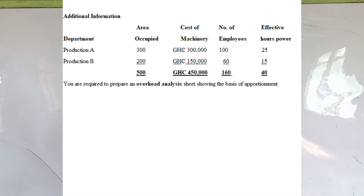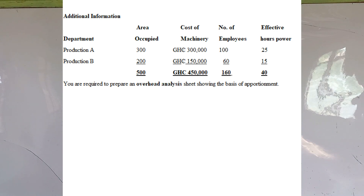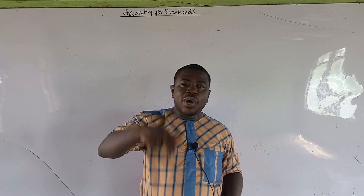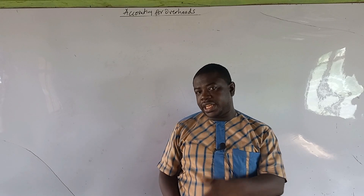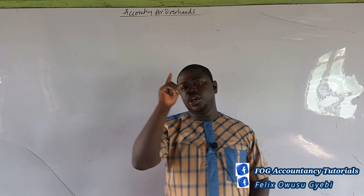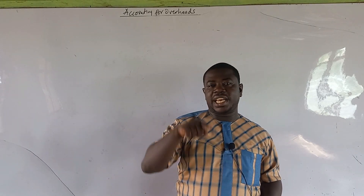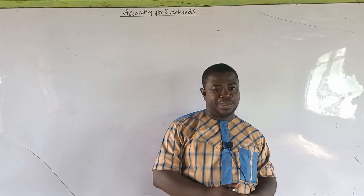Now let's look at the additional information — the basis of apportionment. Area occupied: Department A is 300, Department B is 200, total 500. Cost of machinery: Department A is 300,000, Department B is 150,000, total 450,000. Number of employees: Department A is 100, Department B is 60. Effective horsepower: Department A is 25, Department B is 15, total 40. These figures are used as ratios to split the expenses, and it is you who decides which basis is most suitable for each expense.